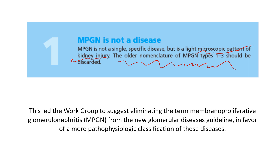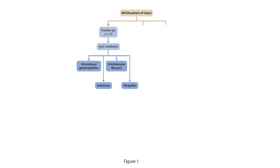That is why the KDIGO guidelines work group suggested eliminating the term MPGN from the new glomerular disease guidelines, and classifying the causes of this pattern into three major categories based on the type of deposits found.